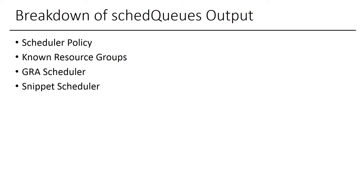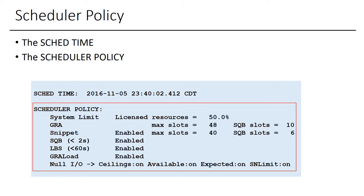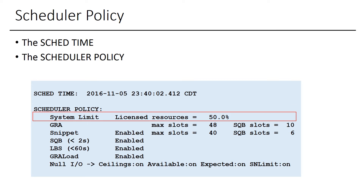We will break down the schedQueues output and discuss each individual section in detail. The Scheduler Policy section summarizes the different scheduler and workload management settings. The sked time represents the date and time when the command was executed — this time is important when investigating a problem and comparing information with other log files. The Scheduler Policy section also displays the maximum unit of works allowed and all the scheduler policies defined in the system.cfg configuration file.